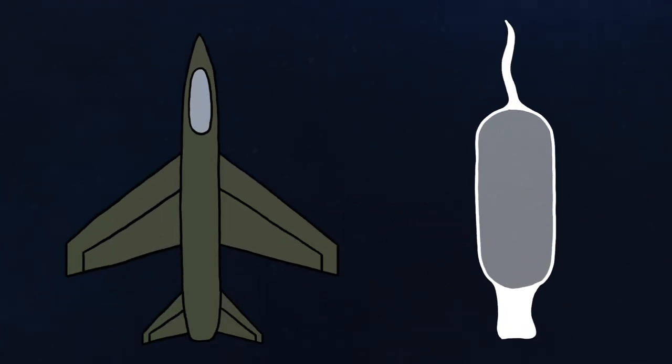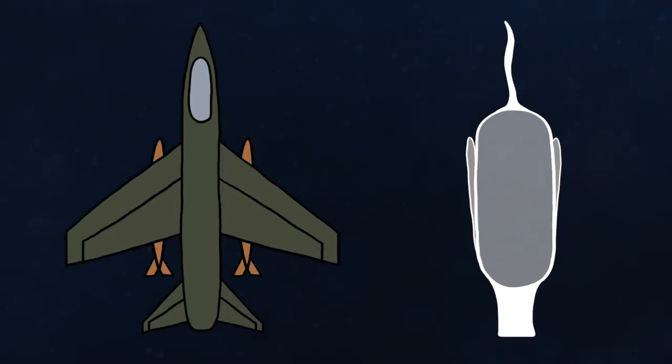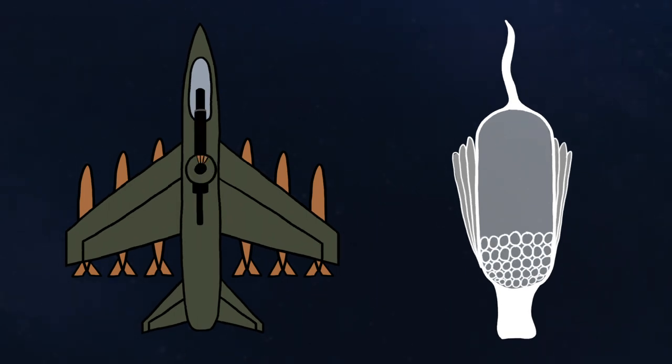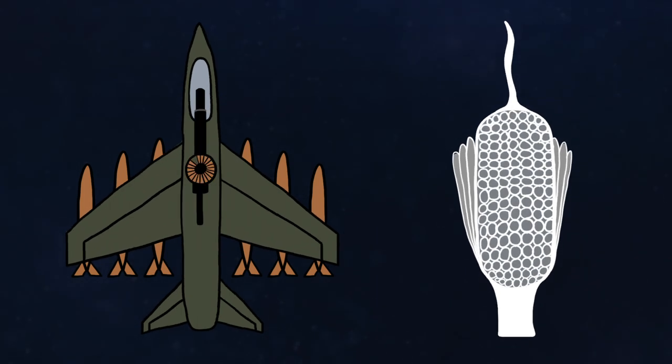Just like the ammunition of a combat plane, tentilla bear a few rocket-caliber, armor-piercing nematocysts and a belt of hundreds of small bullet-caliber nematocysts.